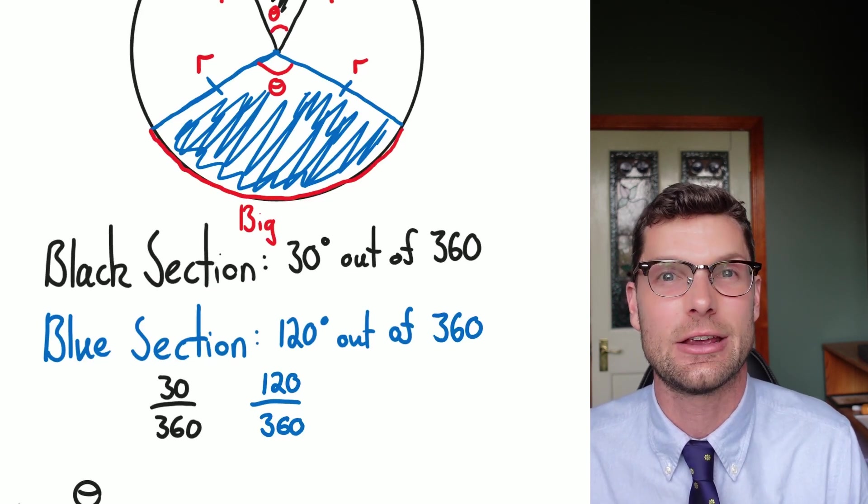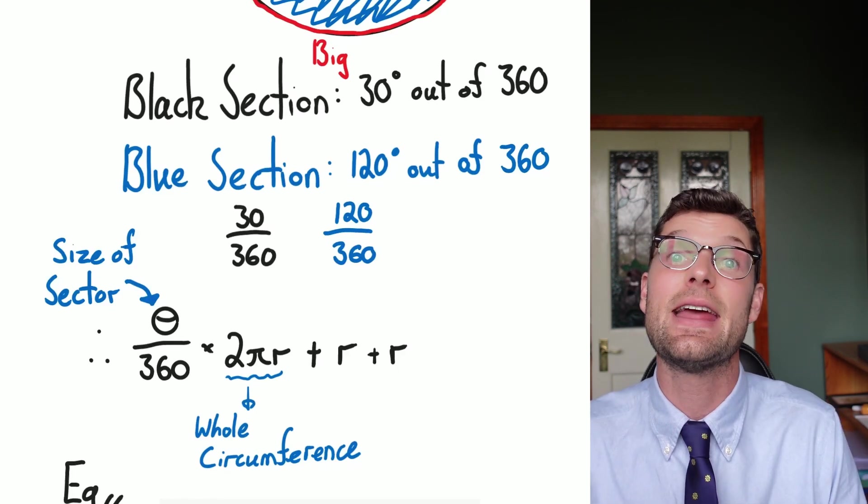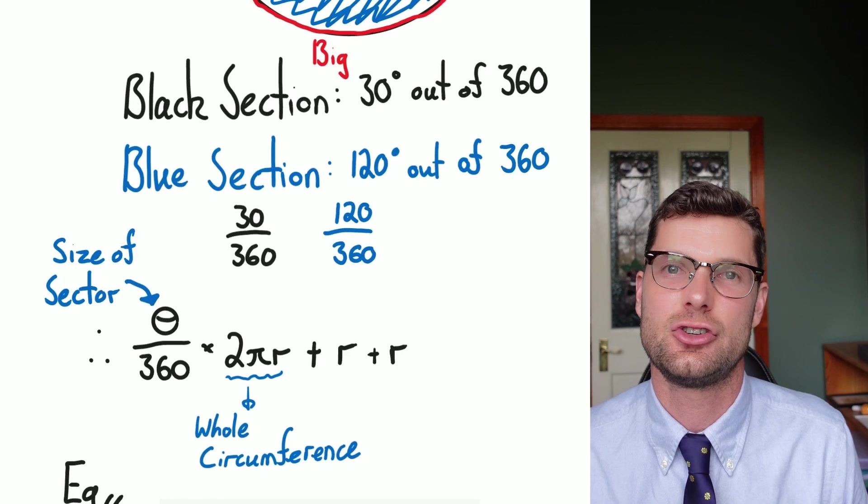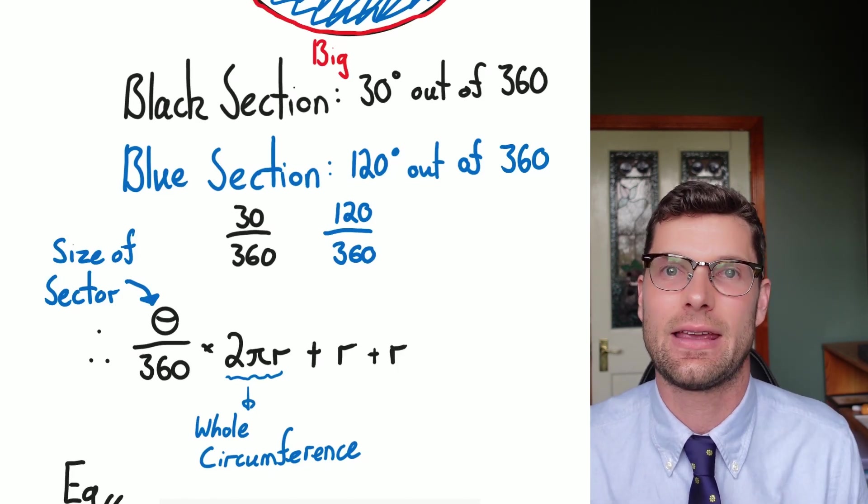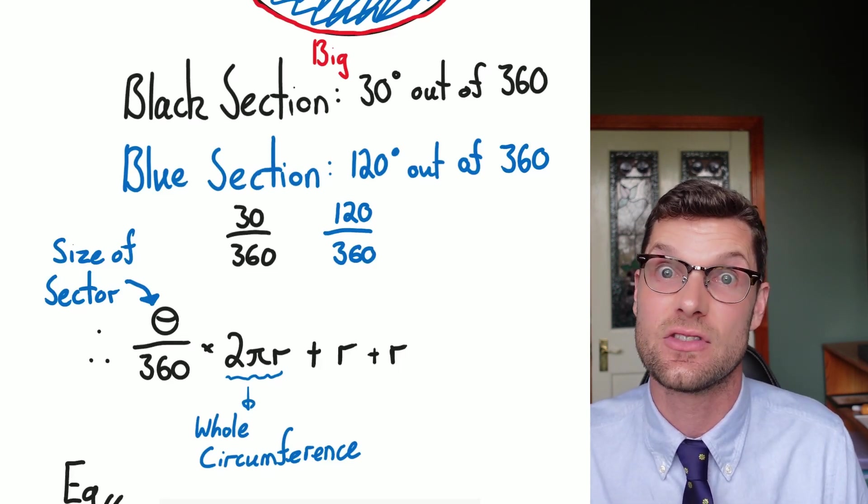So because of this, the formula to find the perimeter of a sector is we need to work out how much of the circumference we've got and then add on the two radii afterwards. So all we've got to do is take the angle that we're given divided by 360, which tells us the size of the sector.